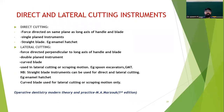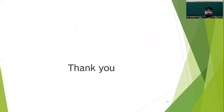Another category includes direct and lateral cutting instruments. Direct cutting means force directed in the same plane as the long axis of the handle and blade — this is a single-plane instrument, for example the enamel hatchet. Lateral cutting has force directed perpendicular to the long axis of the handle and blade — this is a double-plane instrument with a curved blade, for example the spoon excavator and gingival marginal trimmer, used in lateral cutting or scraping motion. This concludes hand cutting instruments in operative dentistry; non-cutting instruments will be covered in the following sessions.